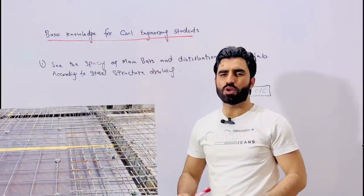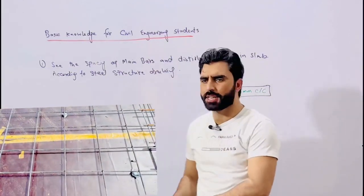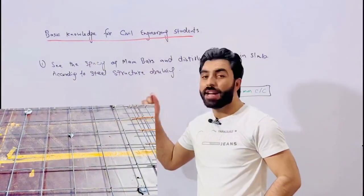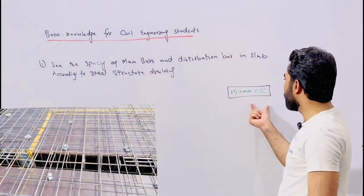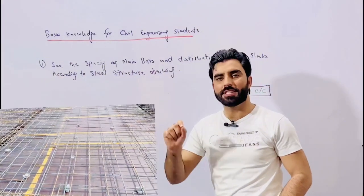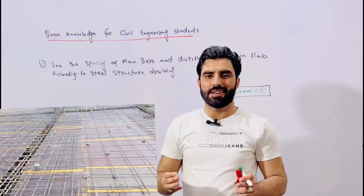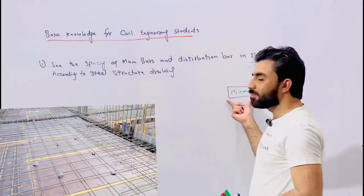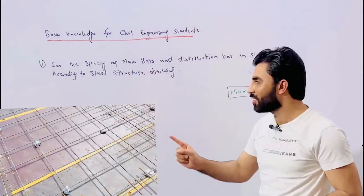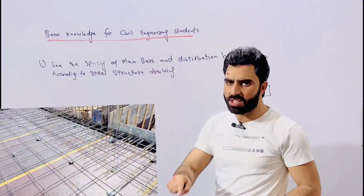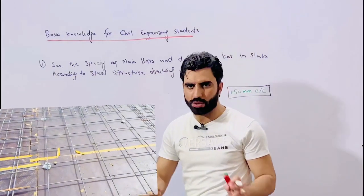This is very important. If the steel reinforcement or main bars and distribution bars have already been placed on the construction site, just take a measurement tape and check manually whether the spacing is 150 mm center to center or not. If it matches the steel structural drawing, that's okay. If there is any problem, discuss it with the steel fixer. The spacing of 150 mm by 150 mm center to center will be better.